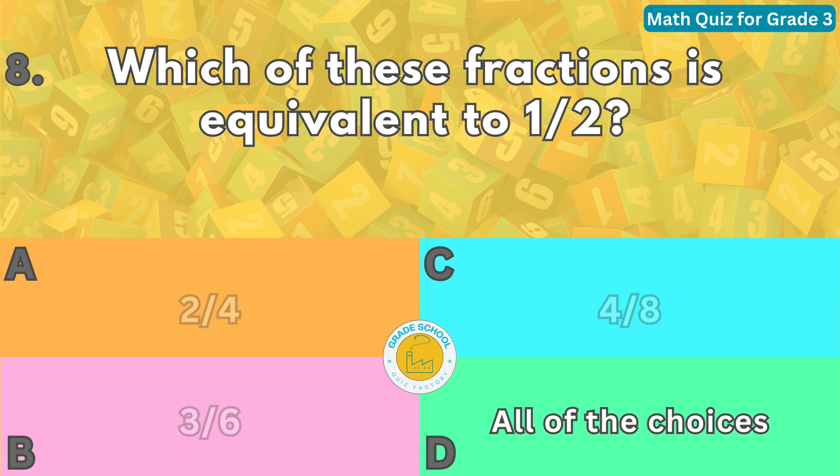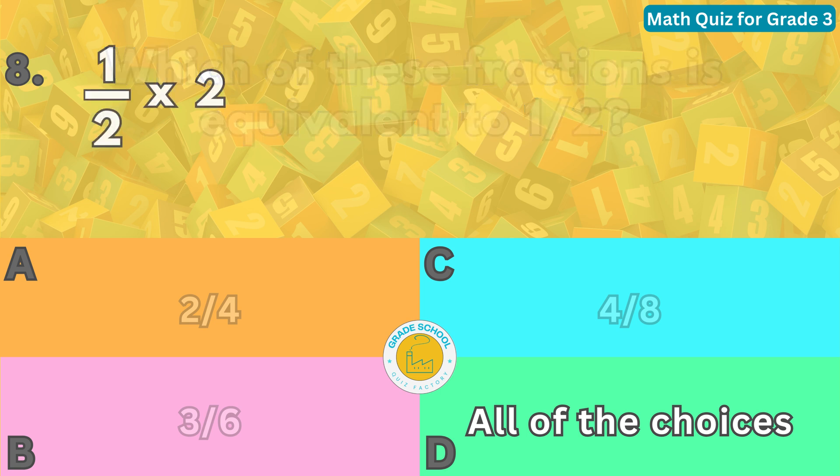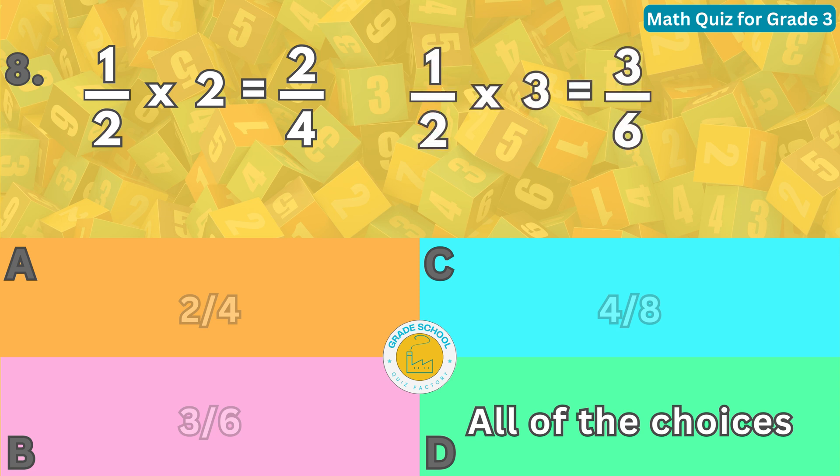To find equivalent fractions, we can simplify or expand the given fraction by dividing or multiplying both the numerator and the denominator by the same number. For example, one half can be expanded by multiplying both one and two by two, which gives two-fourths. Similarly, one half can be expanded by multiplying both one and two by three, which gives three-sixths. All of these fractions have the same value as one half.